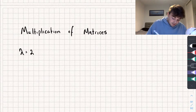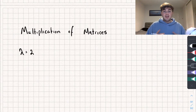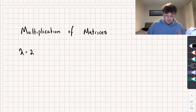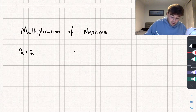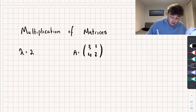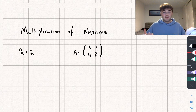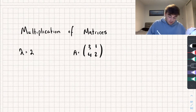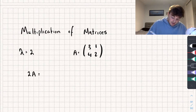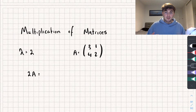Say we had a scalar that's 2. We have a scalar of 2, and I'm multiplying it by matrix A, which I could write as [3, 1; 4, 2] — that's just a random matrix I thought of. So say we want to find 2A, which is the scalar multiplied by matrix A.